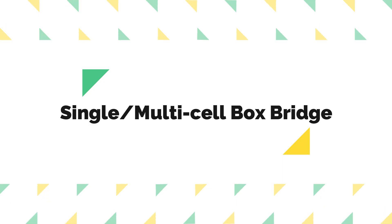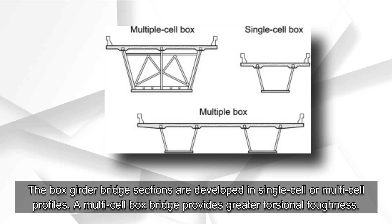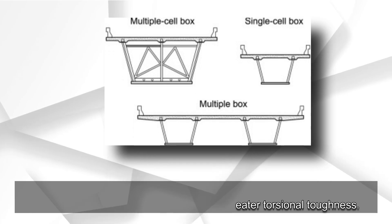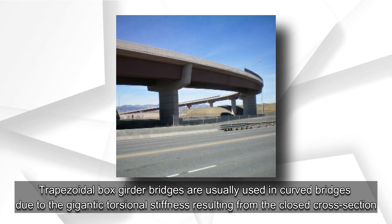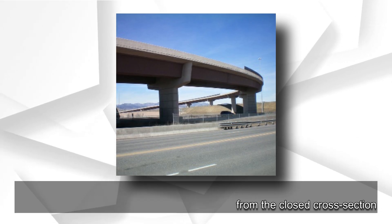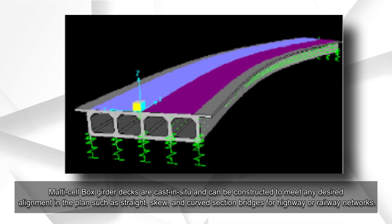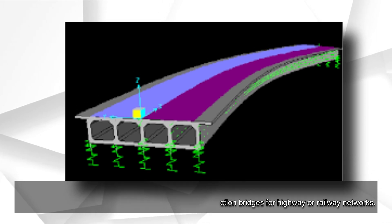Single or multi-cell box bridge. Box girder bridge sections are developed in single-cell or multi-cell profiles. A multi-cell box bridge provides greater torsional toughness. Trapezoidal box girder bridges are usually used in curved bridges due to the gigantic torsional stiffness resulting from the closed cross-section. Multi-cell box girder decks are cast in situ and can be constructed to meet any desired alignment such as straight, skew, and curved section bridges for highway or railway networks.